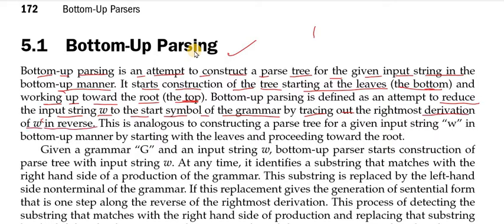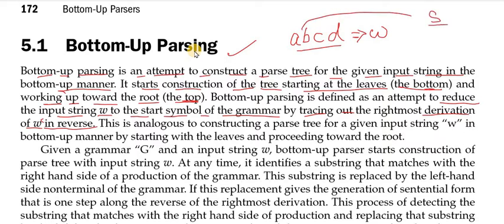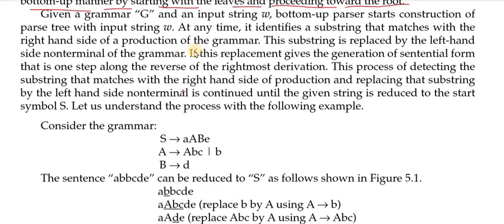This is done by tracing out the rightmost derivation of omega in reverse. The input string is omega — for example A, B, C, D — and we have to trace it out and take it back to the start symbol. This is analogous to constructing a parse tree for a given input string W in a bottom-up manner, starting with the leaves and proceeding towards the root.